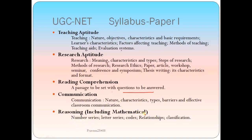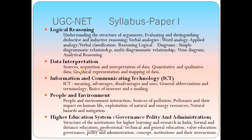Reasoning including mathematics covers aptitude topics like number series, letter series, codes, relationships, and classifications. Logical reasoning includes understanding the structure of arguments, evaluating and distinguishing deductive and non-inductive reasoning, verbal analogies, word analogies, applied analogies, verbal classification, logical diagrams, simple and multidimensional relationships, Venn diagrams, and analytical reasoning. Data interpretation covers sources, acquisition and interpretation of data, quantitative and qualitative data, and graphical representation and mapping of data.